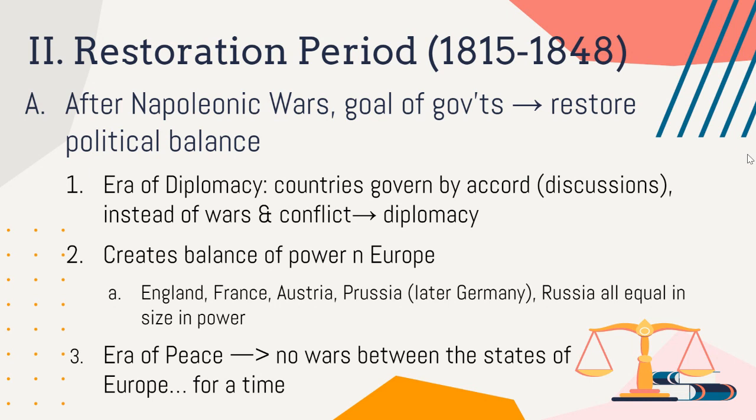This era of diplomacy created a balance of power in Europe, meaning England, France, Austria, Prussia — which will become Germany — and Russia are all relatively equal in size and power. Because they're all kind of the same size and balanced, no one has an advantage over another. It creates an era of peace with no wars between these states of Europe for at least thirty-plus years, because it's not to anyone's advantage when they're all equally matched.